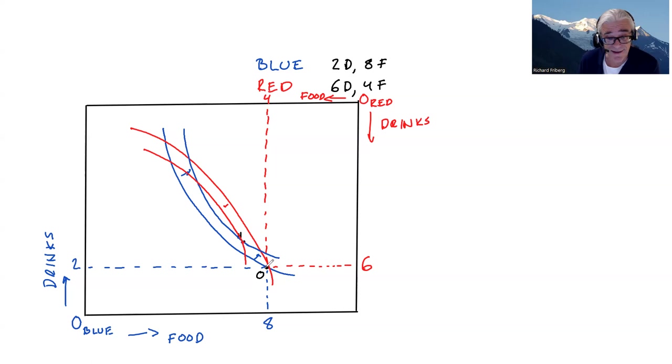And is N Pareto efficient? No, we have in the whole lens here in between, there are points where we similarly could find allocations where both parties were better off. We sometimes say that there are possible Pareto improvements here.